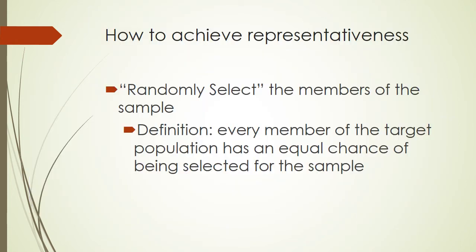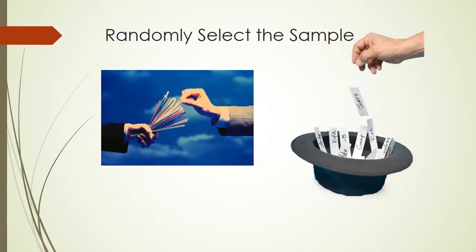Another way that we can try to achieve sample representativeness is to randomly select the members of the sample. There is a very clear definition of random selection: every member of the target population has an equal chance of being selected for the sample. For example, you actually engage in random selection when you do things like draw names out of a hat or draw straws. In this case, every person has basically the same chance as every other person of being selected for your sample.